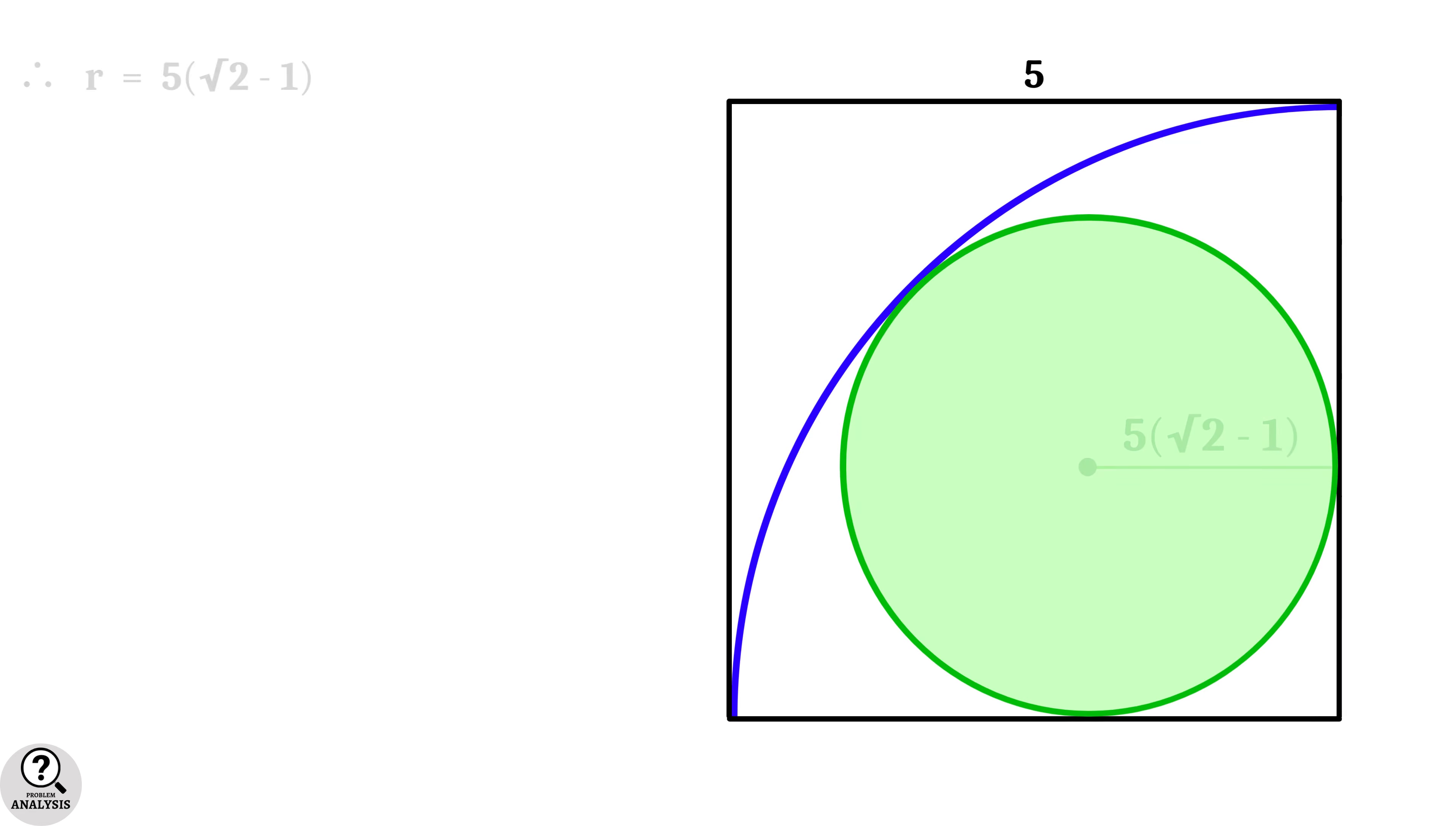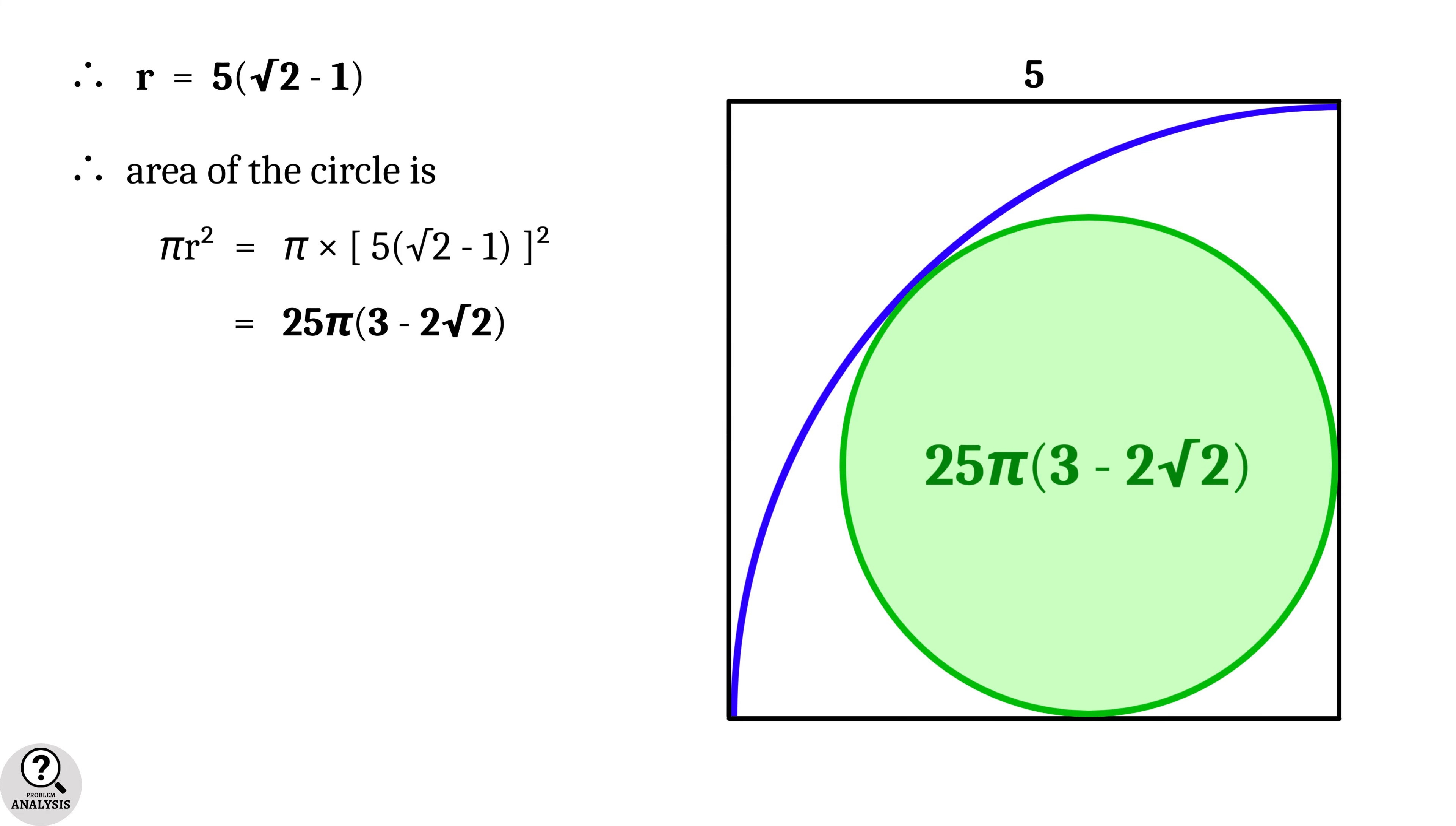That's it. The radius is 5 into root 2 minus 1 and we need to find the area which is pi r square. Substituting the value of radius will give area equal to 25 pi into 3 minus 2 root 2. This value is approximately equal to 13.4753 square units. And that is the solution we are looking for.